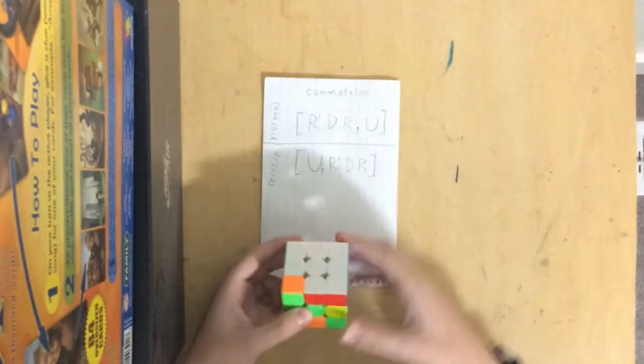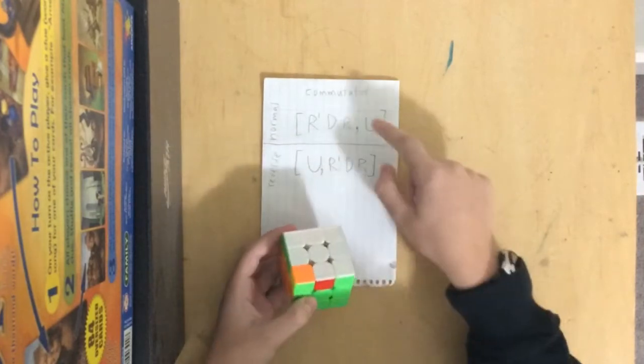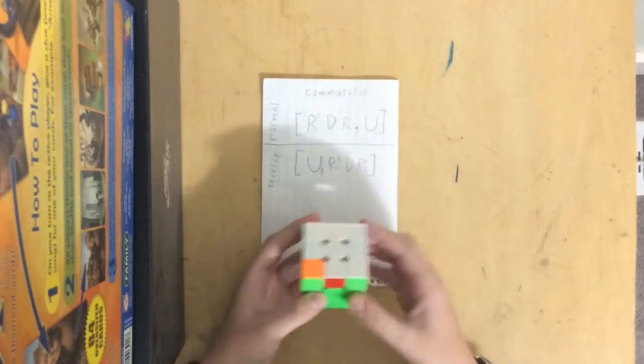Then you do these set of moves backwards, so R' D' R, and then you go back here and do this backwards, U'.